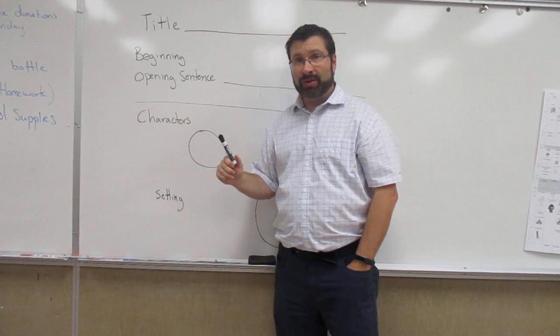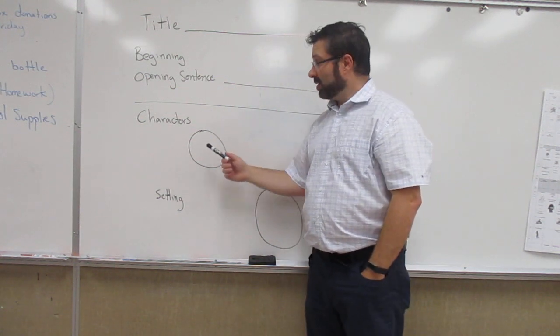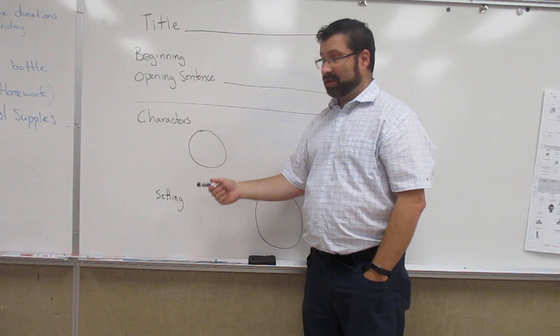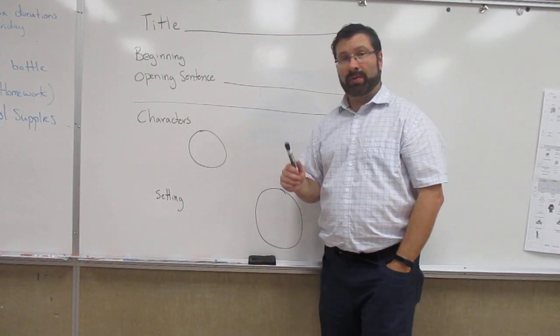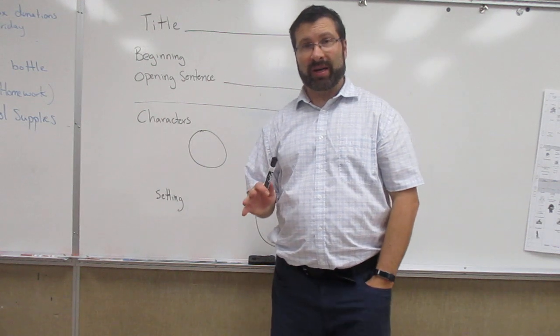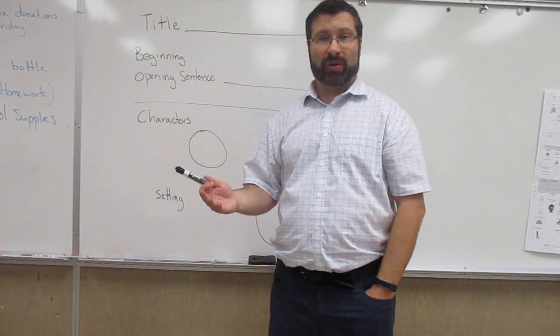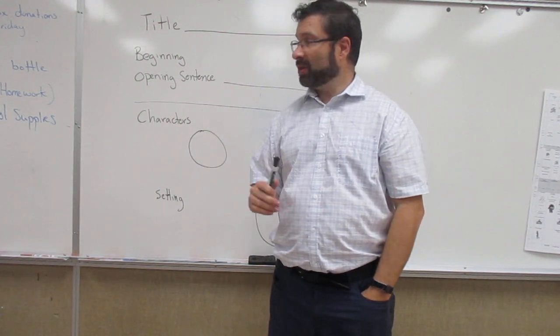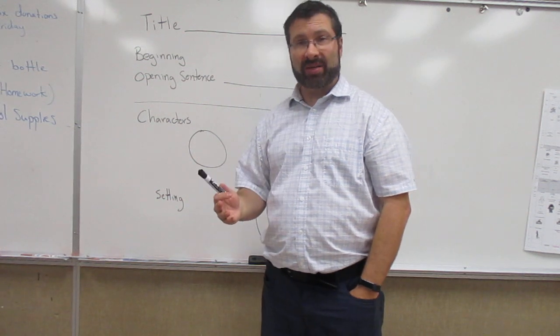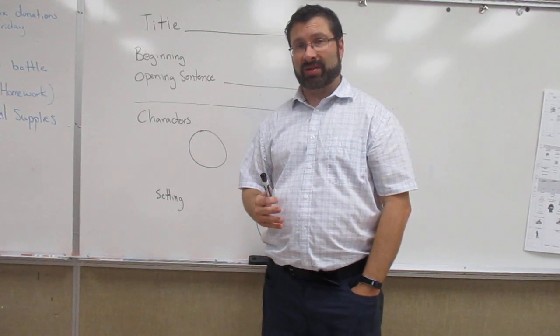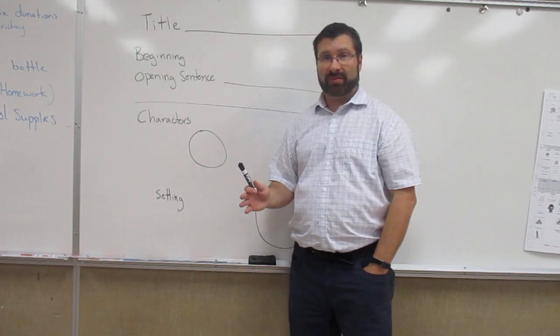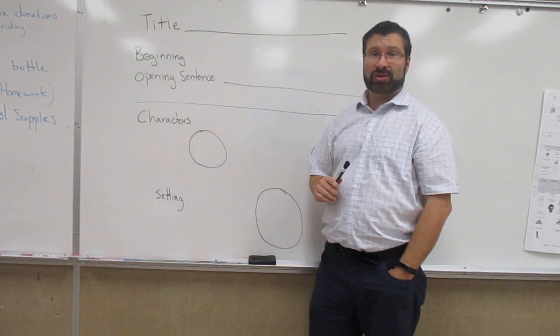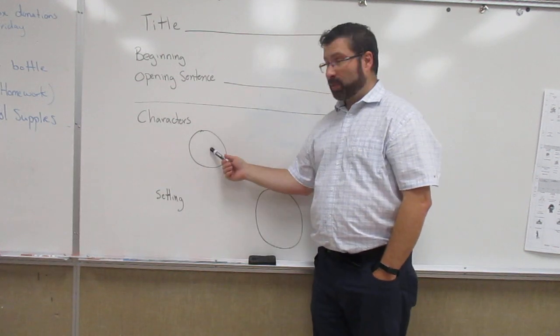What we will do this week and what my class did this week is we're going to do two characters and the setting. So remember from the vocabulary in the slideshow we had about literary elements, we have protagonists and antagonists. So the protagonist, that's the main character, usually the good guy in the story. That's going to be the first circle.